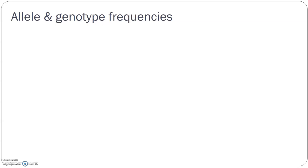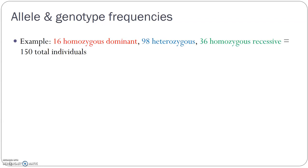Let's look at an example to walk through how we determine allele and genotype frequencies. This is the example in your lab book: we have 150 total individuals in this population. 16 of them are homozygous dominant (AA), 98 are heterozygotes (Aa), and 36 are homozygous recessive (aa). When given a known population, we can figure out how many alleles and genotypes are in this population.